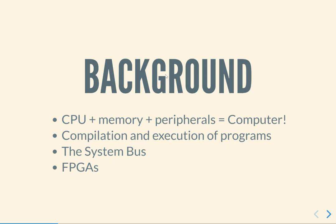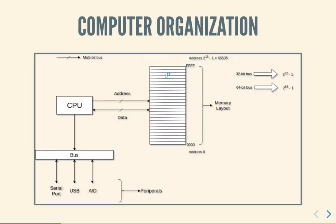What do FPGAs enable us in terms of how we can build custom hardware? The overall organization of any computer, whether it is a top 500 supercomputer or the processor inside a microwave oven, is more or less the same. There is a CPU or central processing unit that communicates with a large block of memory. The memory layout is basically marked as addresses going from 0x0000 to 0xFFFF.